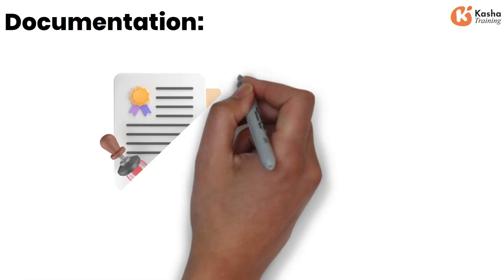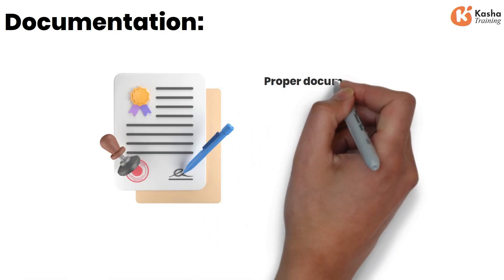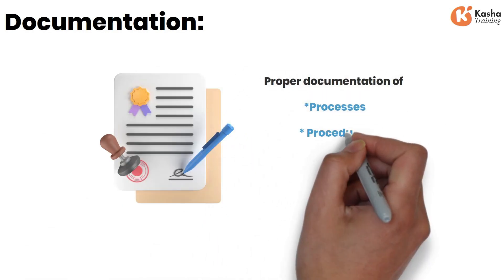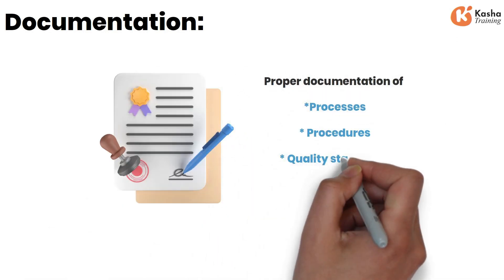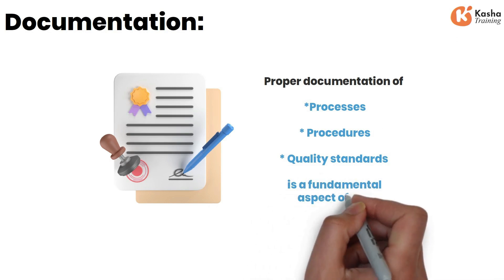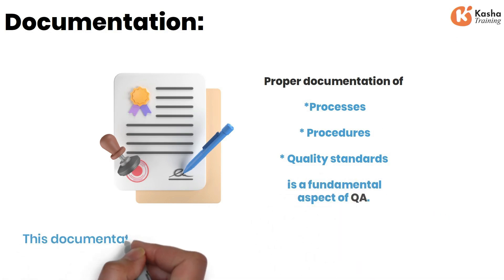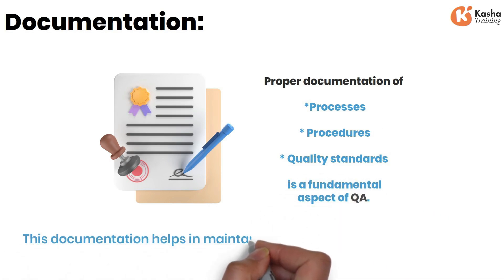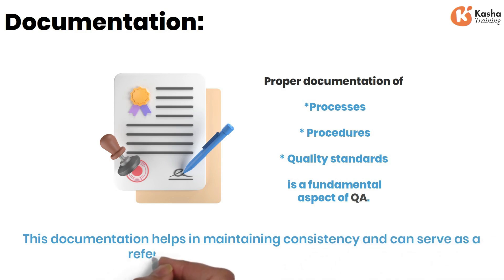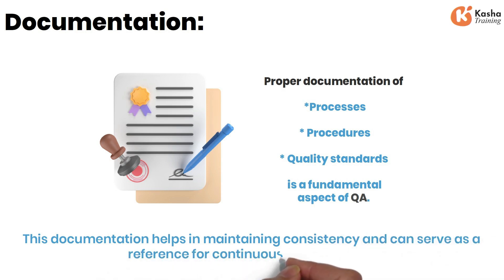Documentation. Proper documentation of processes, procedures, and quality standards is a fundamental aspect of QA. This documentation helps in maintaining consistency and can serve as a reference for continuous improvement.